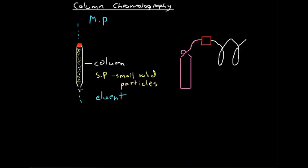In order to form the chromatogram and analyze how long different components are taking to come out, we pass the eluent through a detector. A UV detector is one commonly used — UV light is shone through the eluent stream onto a detector. Depending on what substance is in the eluent at a given time, different amounts of UV light pass through, since different components absorb different amounts. As the makeup of the eluent changes, different amounts of UV light reach the detector, giving varying readings to analyze.